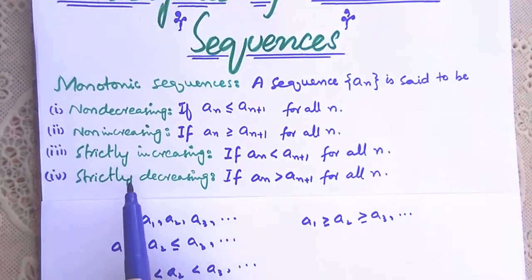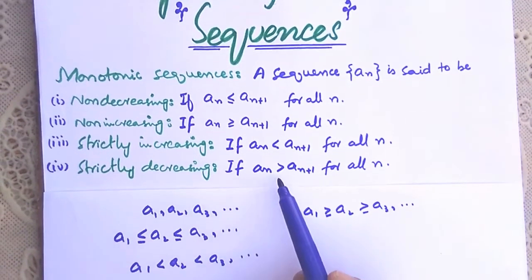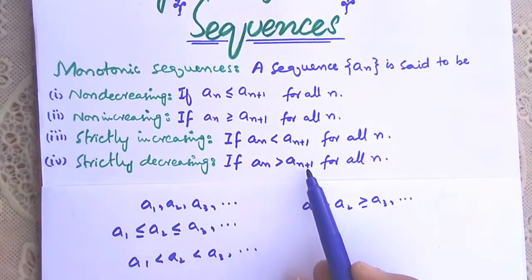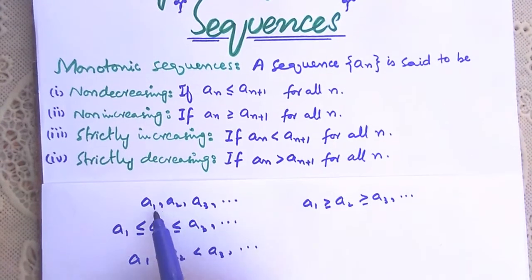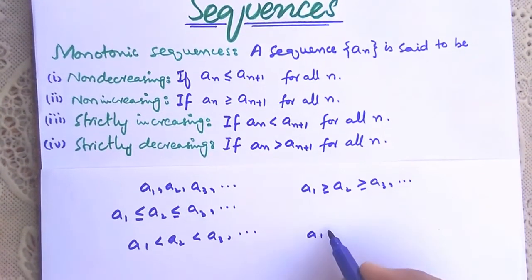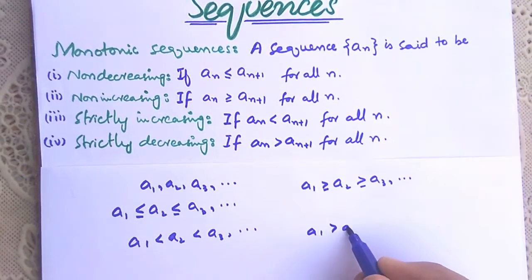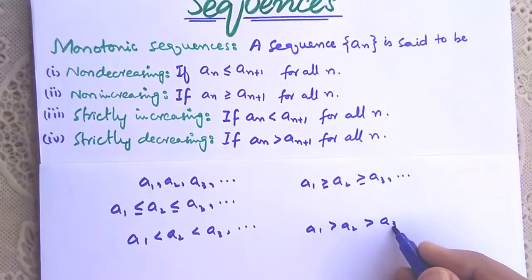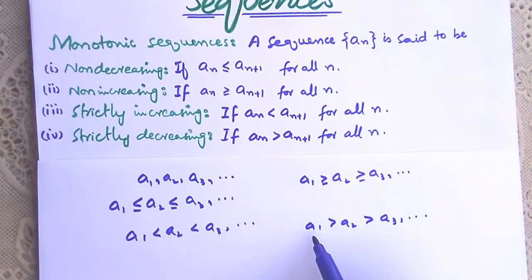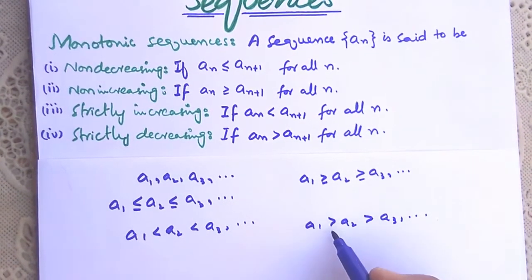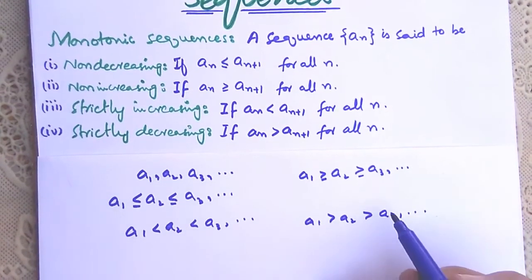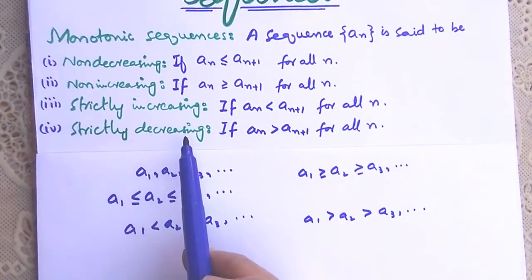And strictly decreasing: if a_n is greater than a_{n+1}, meaning the sequence has the order a1 > a2 > a3 and so on — every preceding term is greater than its successive term — then the sequence is strictly decreasing.